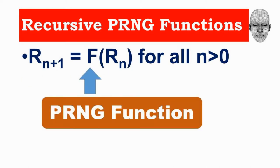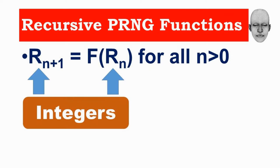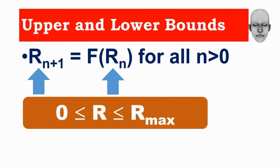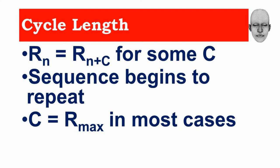The function f is the pseudo random number generator function. r(n) and r(n+1) are integers lying in a range, with the minimum value usually being zero and the maximum defined as r_max. After a certain number of values have been generated they start repeating: r(n) equals r(n+c) for some large value c, known as the cycle length. In most good PRNGs, c equals r_max.